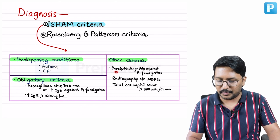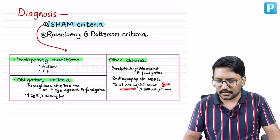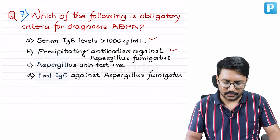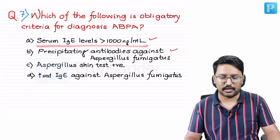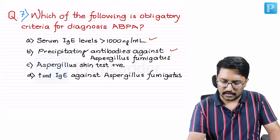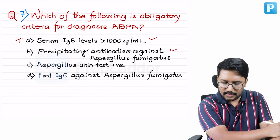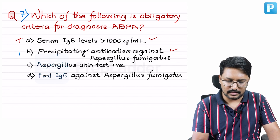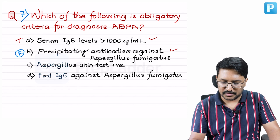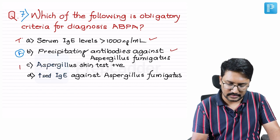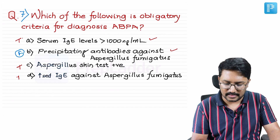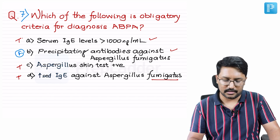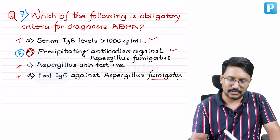The other criteria include precipitating antibodies and eosinophil count. Going back to the question: serum IgE levels more than 1000 nanograms per ml — true, it is an obligatory criteria. Precipitating antibodies against Aspergillus fumigatus — false, this is an other criteria. Aspergillus skin test positivity — true, that is an obligatory criteria. Increased IgE against Aspergillus fumigatus is also an obligatory criteria. The right answer for this question is option B.